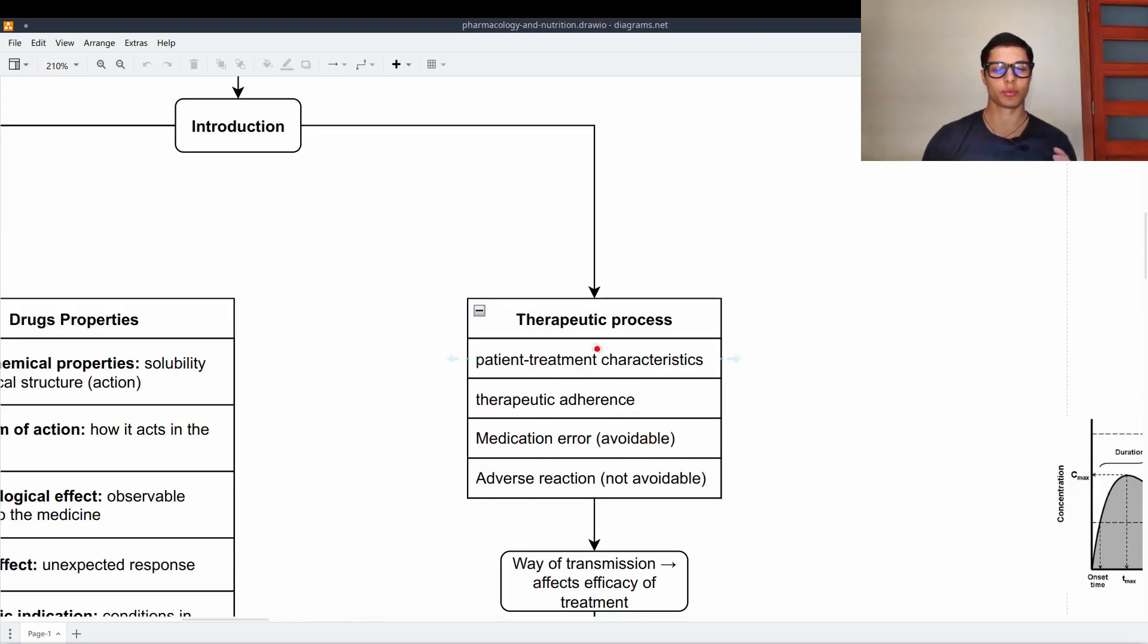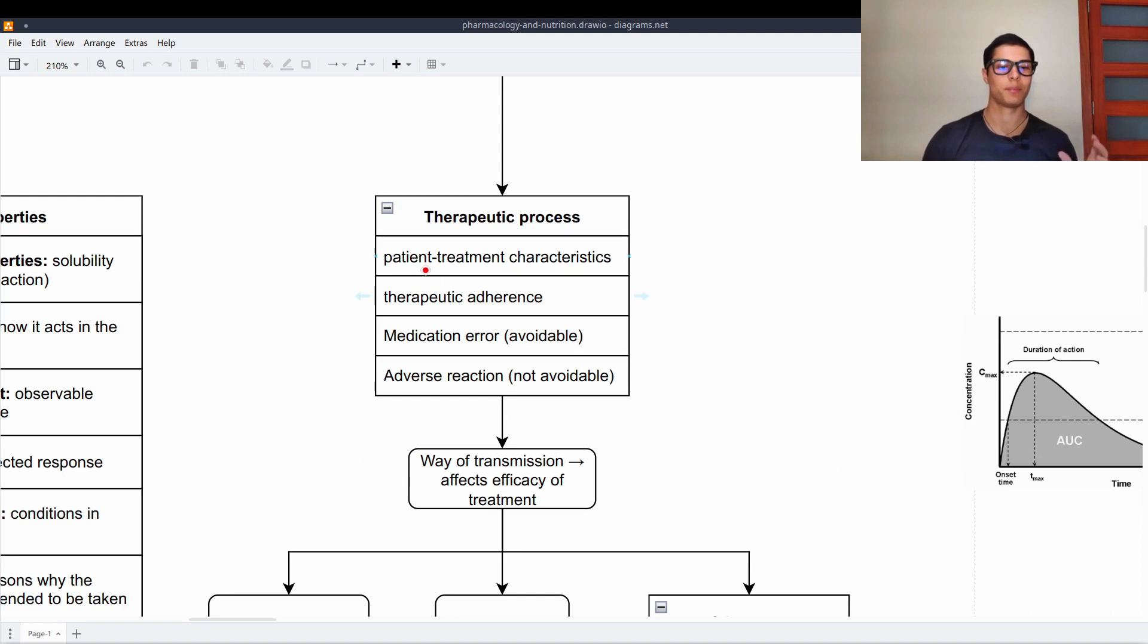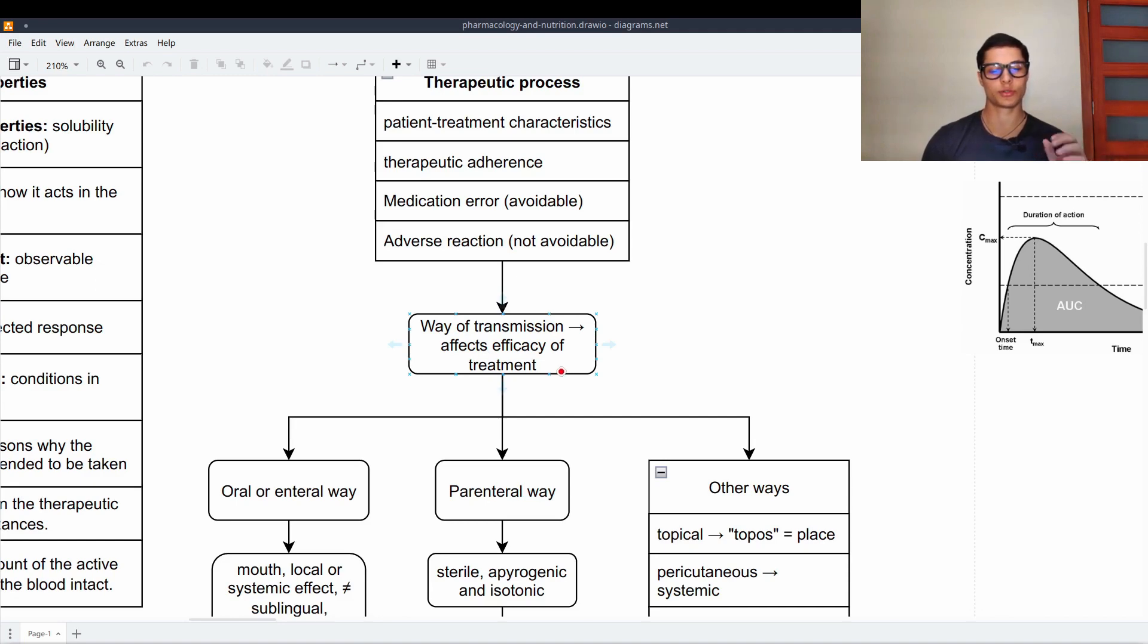Then we have to understand the therapeutic process. There are some concepts here to keep in mind. Patient treatment characteristics. The treatment we give a patient must be specific to him or her and it has to be compatible with their lifestyle for example. Therapeutic adherence has something to do with that as well. Medication error is something avoidable and adverse reaction is something not avoidable. These can be mistaken but they are different.